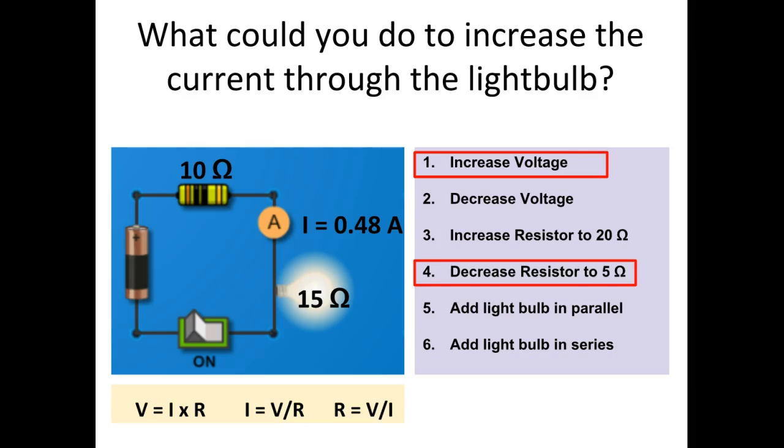Adding another light bulb in parallel will not change the current in our current light bulb, so that would not work. The total current would increase, but the current through that light bulb would not. Adding another light bulb in series would increase the resistance and therefore reduce the current.